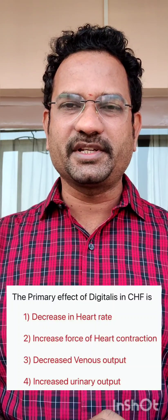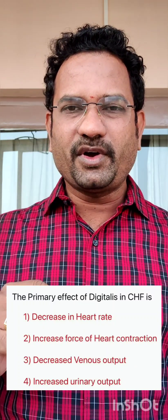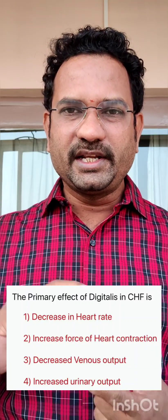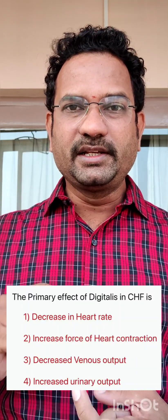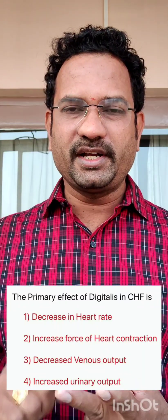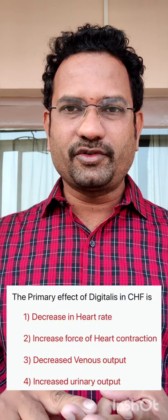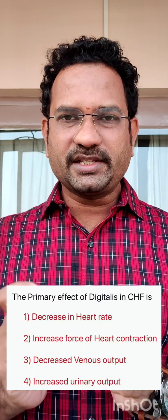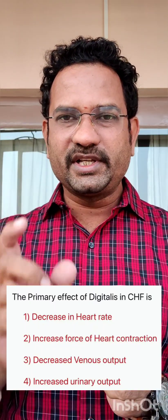Welcome to this video on the primary effect of digitalis mechanism. We'll understand this concept with the help of a question from a drug inspector examination. The question asks: which of the following is the primary effect of digitalis glycoside? Options given are: decreased heart rate, increased contraction of myocardial tissue, decreased venous output, and increased urinary output.